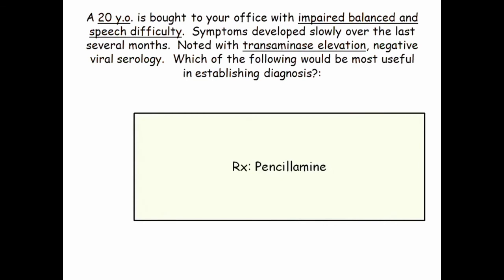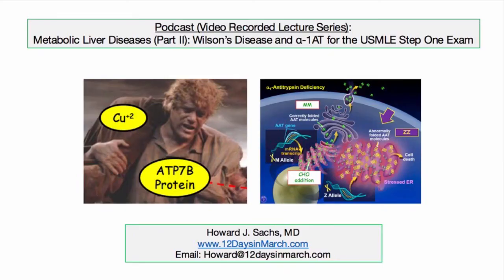Treatment for Wilson's disease is penicillamine. That concludes this detailed discussion of Wilson's disease and alpha-1 antitrypsin for the USMLE Step 1 exam. If you have any questions or concerns, please email me at 12days. Thank you.